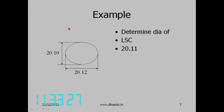For the minimum zone circle it will be the same. Two concentric circles: one circle will go through the outer points, the other circle will go through the inner two points. The diameter of the circle will also be 20.11 because it is a symmetric object, but if it is not symmetric it will not be the same.